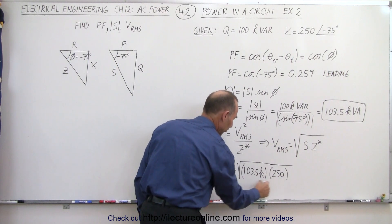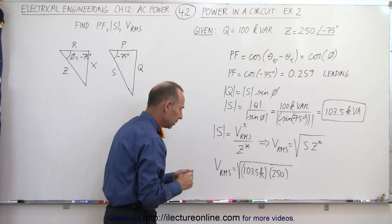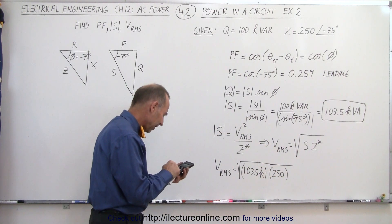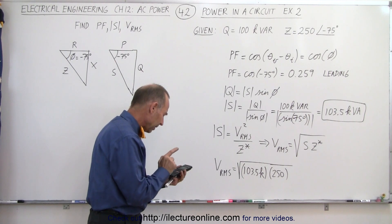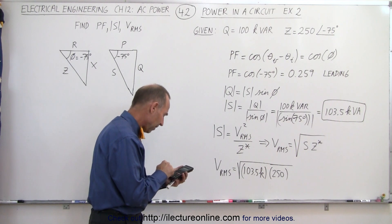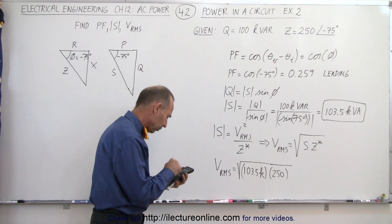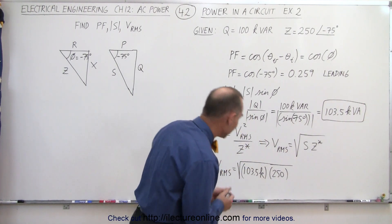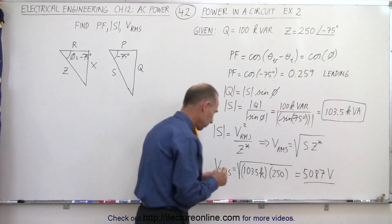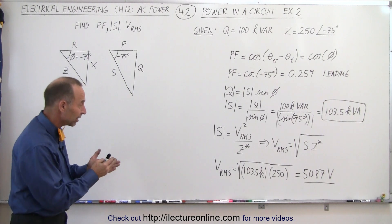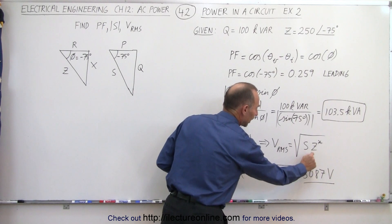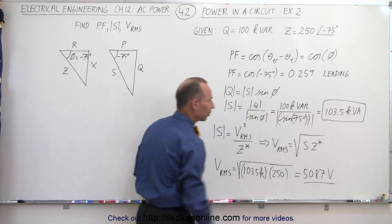Be careful: Z is in actual ohms and S is in kilo, so we have 103,500 times 250. Take the square root of that and we get 5,087 volts — that's V-RMS. We're looking for the magnitude of the RMS voltage, so we only multiply the magnitudes and don't need to worry about the phase angle.